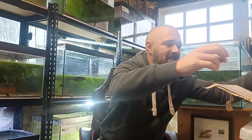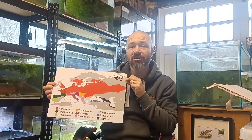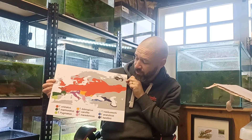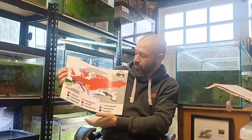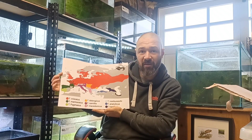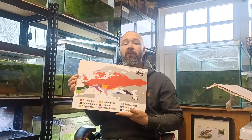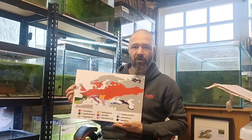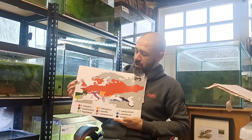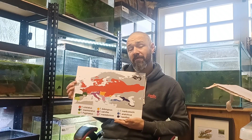Hi guys and welcome to another video. I've just received something in the post that I wanted to show you all — it is a map. It's a distribution map of the genus Triturus showing all nine species and where they're found through Europe and also into parts of Asia, so basically it's a full global distribution map for the whole genus. I thought it'd be a cool video to go through the map and talk about the different species and where they're found in the wild.